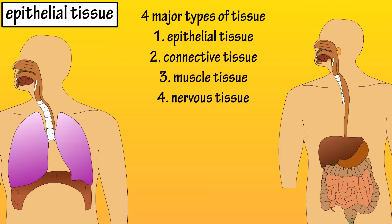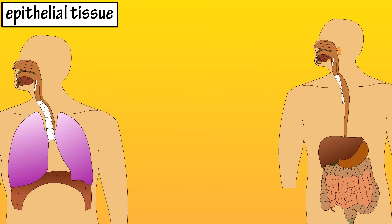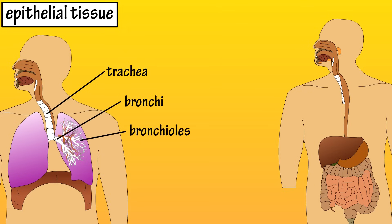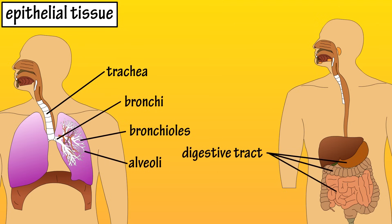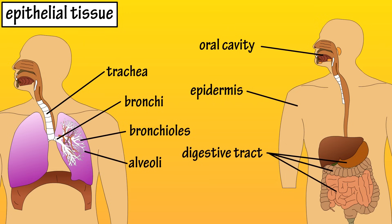Epithelial tissue is one of the four major types of tissue in the body, and it can be found throughout many parts of the body. It lines many of the structures of the respiratory tract, such as the trachea, bronchi, bronchioles, and alveoli, which are the tiny air sacs in the lungs. It also lines most of the digestive tract, the epidermis of the skin, the oral cavity, and many of the glands in the body.